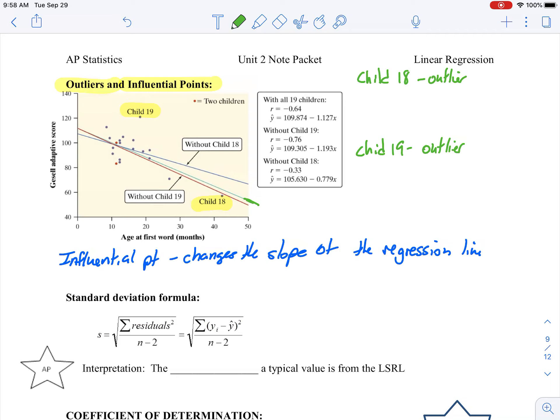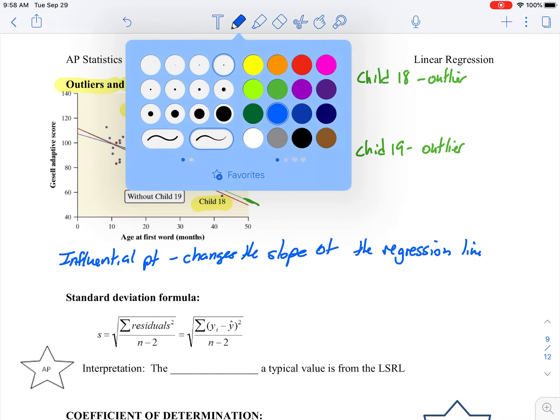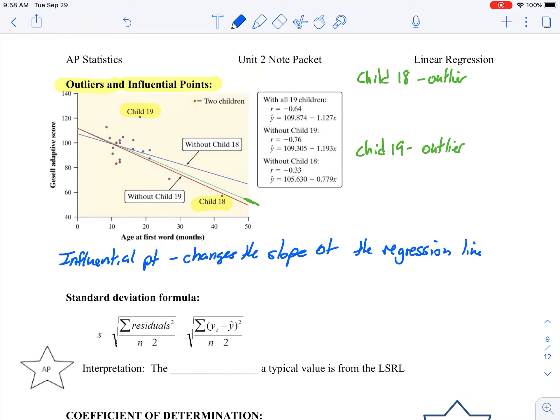However, when we talk about whether they are influential or not, then we have to go look at the slope of the regression line. And that's what they did here. So what they did was they took child 18 and they took out child 18 and that created the blue line. So since my slope changed by this much, that is going to work. Well, that will deem as a significant change. So therefore, child 18, we're going to consider to be influential.